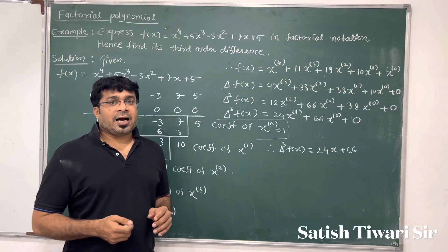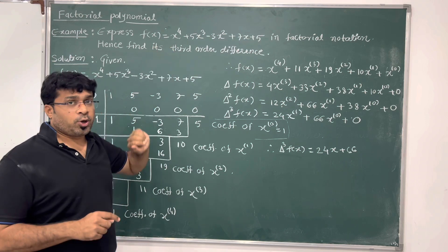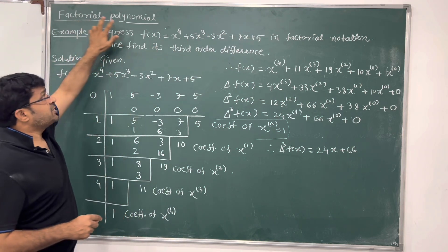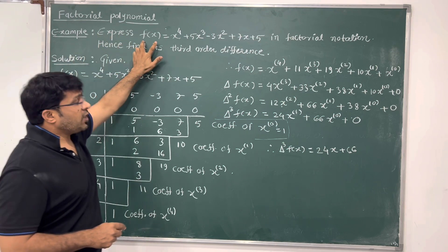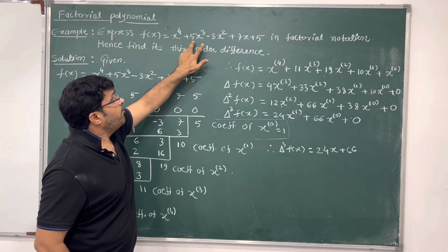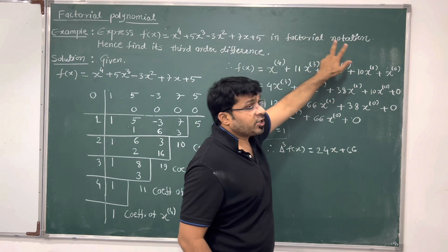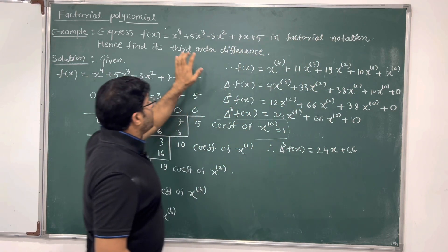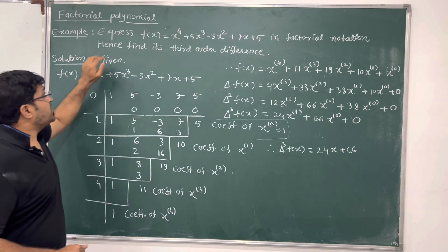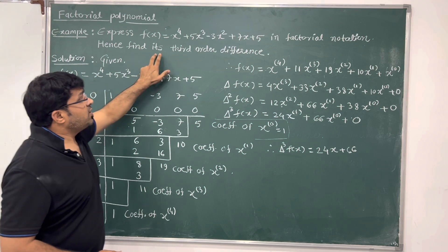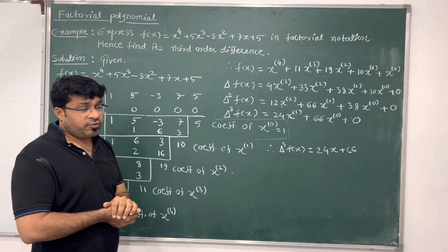Hello dear students, today we will see how to convert a given polynomial into the factorial polynomial. Here we are dealing with the topic of factorial polynomial. The example is: express the function f(x) = x to the power 4 plus 5x cubed minus 3x squared plus 7x plus 5 in factorial notation. We also have to find its third order forward difference.